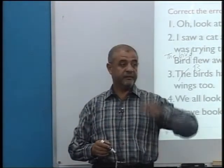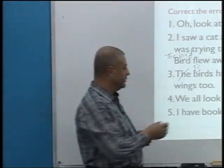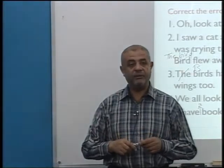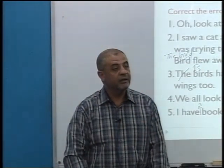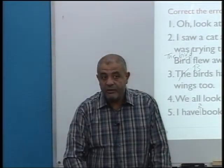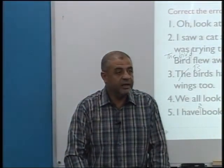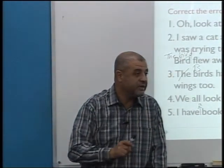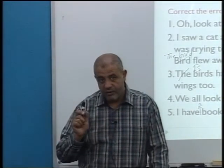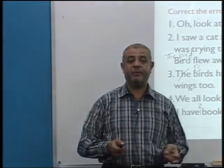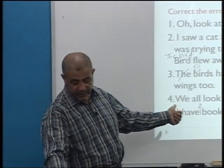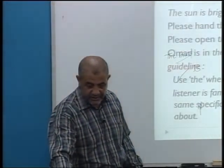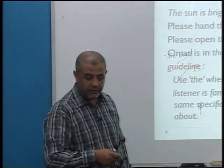'I have a book' — the noun should be preceded by an article. 'Give me your book, give me this book, give me my book' — but never say 'give me book' or 'I have book.' The noun must always be preceded by an article, a pronoun, or a demonstrative like this or that.